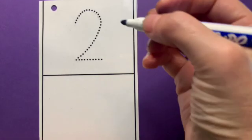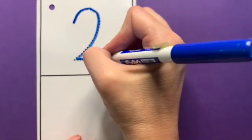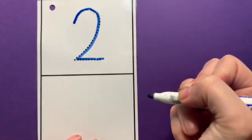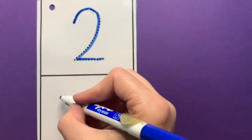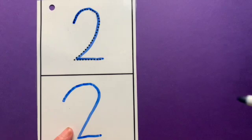Number two is about. Over the rainbow and kick it out. Your turn. Number two is about. Over the rainbow and kick it out.